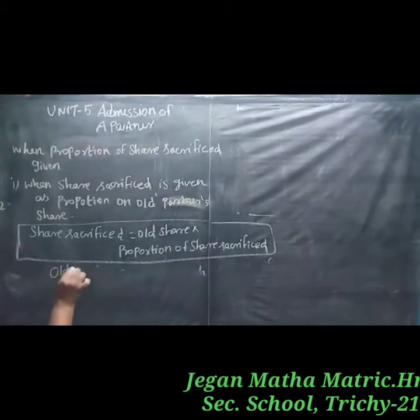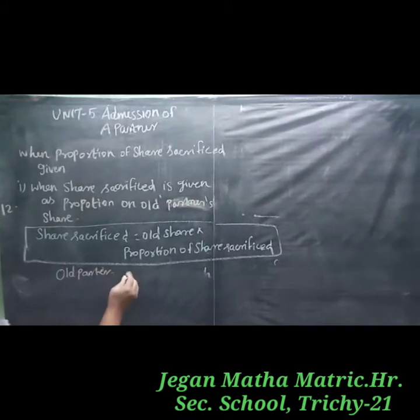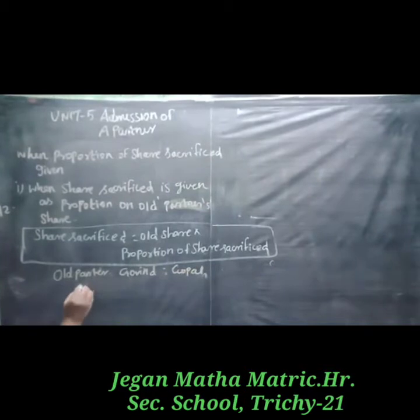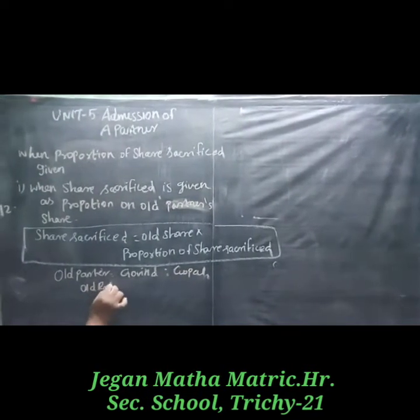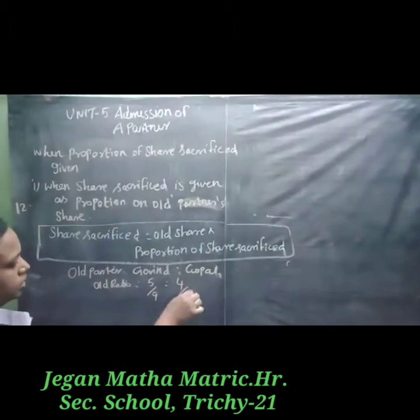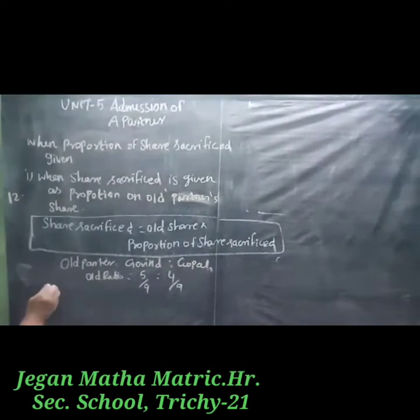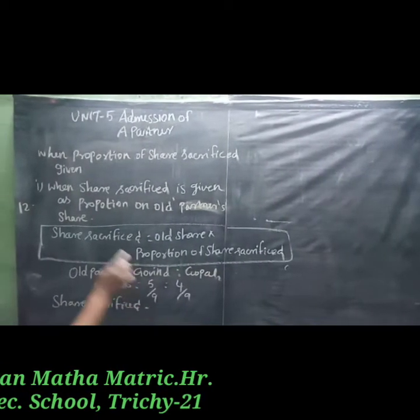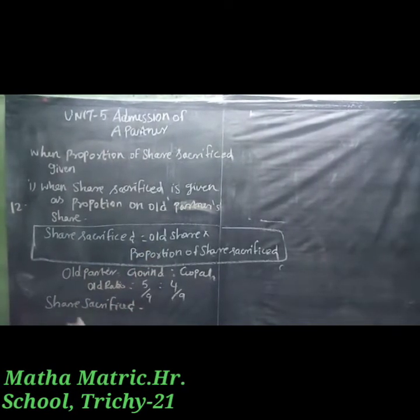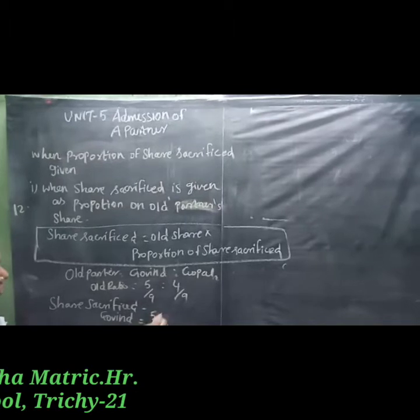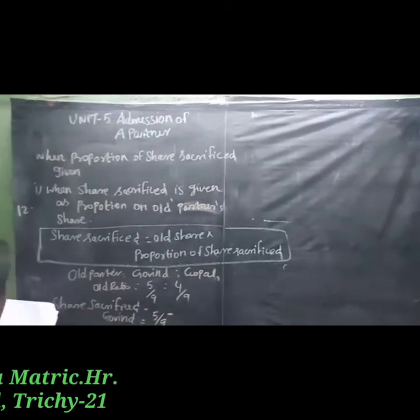Old partners are Govindar and Gopal, with old ratio 5 to 4, giving old shares 5/9 and 4/9. Share sacrifice formula: old share multiplied by proportion of share sacrifice. For Govind: 5/9 × 2/9 = 10/81.